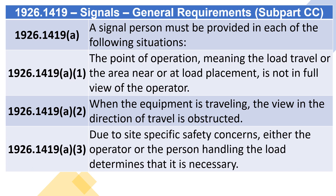1926.1419(A): A signal person must be provided in each of the following situations — 1926.1419(A)(1) through (A)(3): The point of operation, meaning the load travel or the area near or at load placement, is not in full view of the operator. When the equipment is traveling, the view in the direction of travel is obstructed. Due to site-specific safety concerns, either the operator or the person handling the load determines that it is necessary.